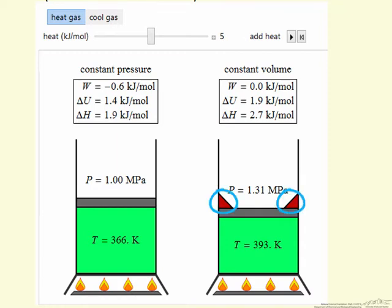The stops here are used to indicate that the piston is constrained when we heat it. When we cool it, the stops would be below so that the piston cannot move down.